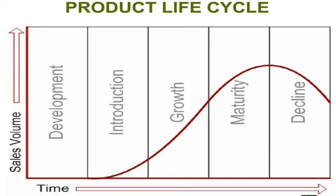The growth stage is when the product comes into the market and people have started accepting it — then you see lots and lots of profits. Coming to the fourth stage, which is maturity: people have gotten used to your product. This is a very tricky stage. You need to think differently — you need to be sharp and innovative. If not, you will fall into the trench, starting to lose profits. That's our PLC.